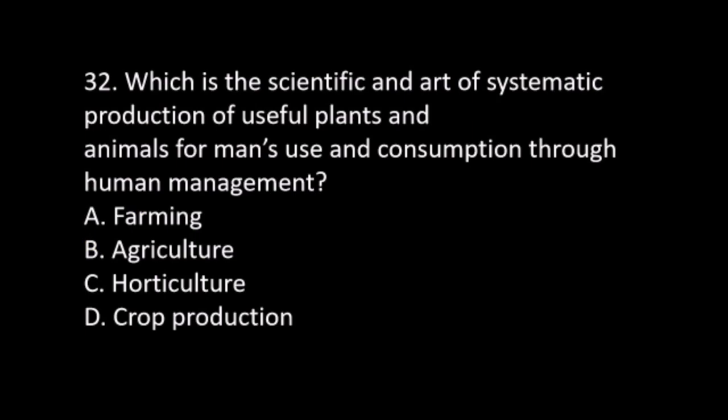Number 32. Which is the science and art of systematic production of useful plants and animals for man's use and consumption through human management? A. Farming. B. Agriculture. C. Horticulture. D. Crop production. The answer is B. Agriculture.